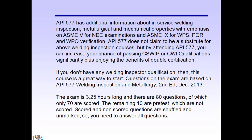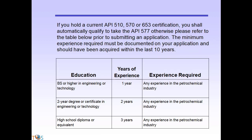If you don't have any welding inspector qualification, this course is a great way to start. Questions on the exam are based on API 577 Welding Inspection and Methodology, Second Edition, December 2013. The exam is 3.25 hours long and there are 80 questions, of which only 70 are scored. The remaining 10 are pretest questions which are not scored. Scored and non-scored questions are shuffled and unmarked, so you need to answer all questions.